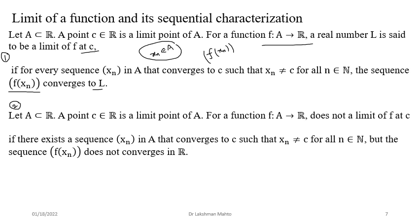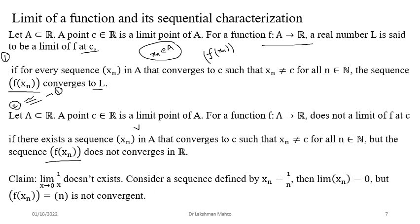The negation tells us when a function does not have a limit: if we find a sequence converging to c but the corresponding functional sequence {f(x_n)} is not converging to any point, we say the function is not having a limit. The sequential criteria is more suited for proving the non-existence of limits.